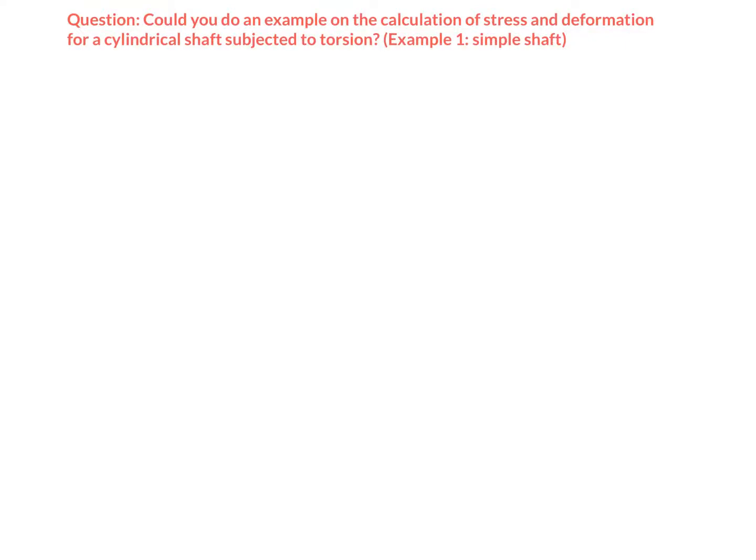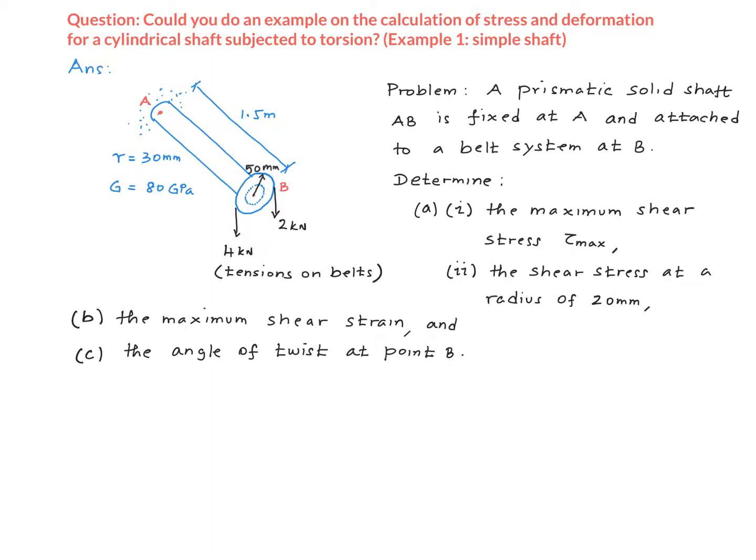The question is, could you do an example on the calculation of stress and deformation for a cylindrical shaft subjected to torsion? In this example, I'll consider a simple prismatic shaft. This is the problem that I have chosen here. We have a simple solid prismatic cylindrical shaft AB, which is fixed at point A and attached to a belt system at point B. The radius of the pulley that carries the belt is 50 mm. The tension on the belt is 4 kN on one side and 2 kN on the other side. The shear modulus of the material that makes up the shaft is given, 80 GPa.